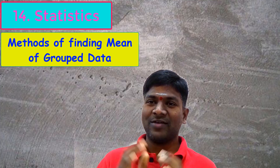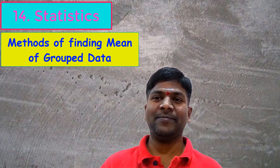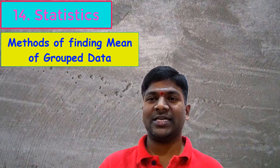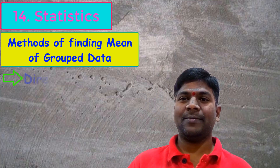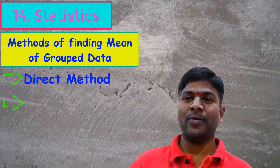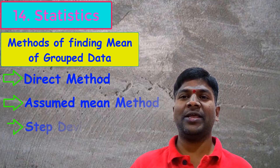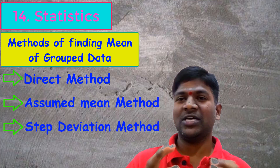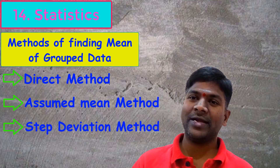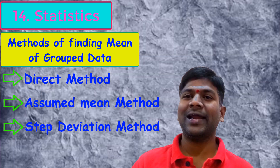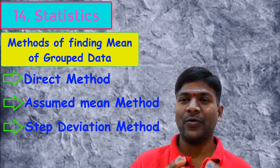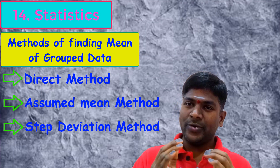Hi viewers and students. In the last classes we discussed one of the central tendencies — mean — covering the direct method, assumed mean method, and step deviation method, which are used to find the mean of classified or grouped data. Today, let us discuss another central tendency: mode.